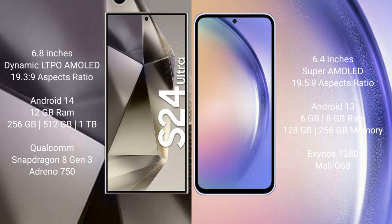Samsung Galaxy S24 Ultra comes with 12GB RAM and 256GB, 512GB, or 1TB internal storage, powered by a Qualcomm Snapdragon 8 Gen 3 processor and GPU Adreno 750.